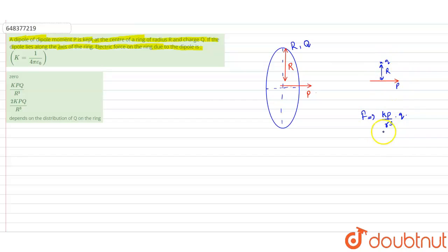The force exerted due to the dipole will be kp by r cubed into the charge q placed here. This is the force, this will be the electric field created by the dipole and f will be e into q. So this will be the force due to the dipole on this point charge q at a distance r from the dipole.